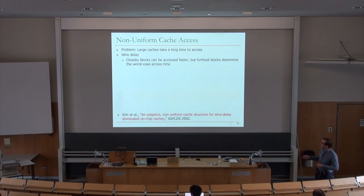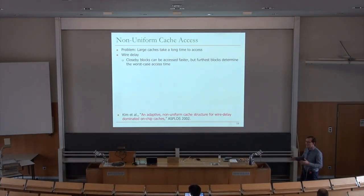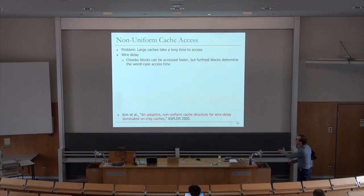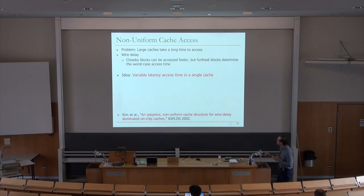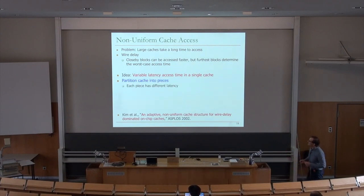Close-by blocks can be accessed faster, but the furthest blocks determine the worst-case access time. You don't want the entire cache dominated by worst-case interconnect latency — it's similar to DRAM where long bit lines cause latency issues. The idea is to segment the cache so parts closer to sensing structures are accessed faster. You get variable latency access time in a single cache, and the question becomes which piece an address maps to.